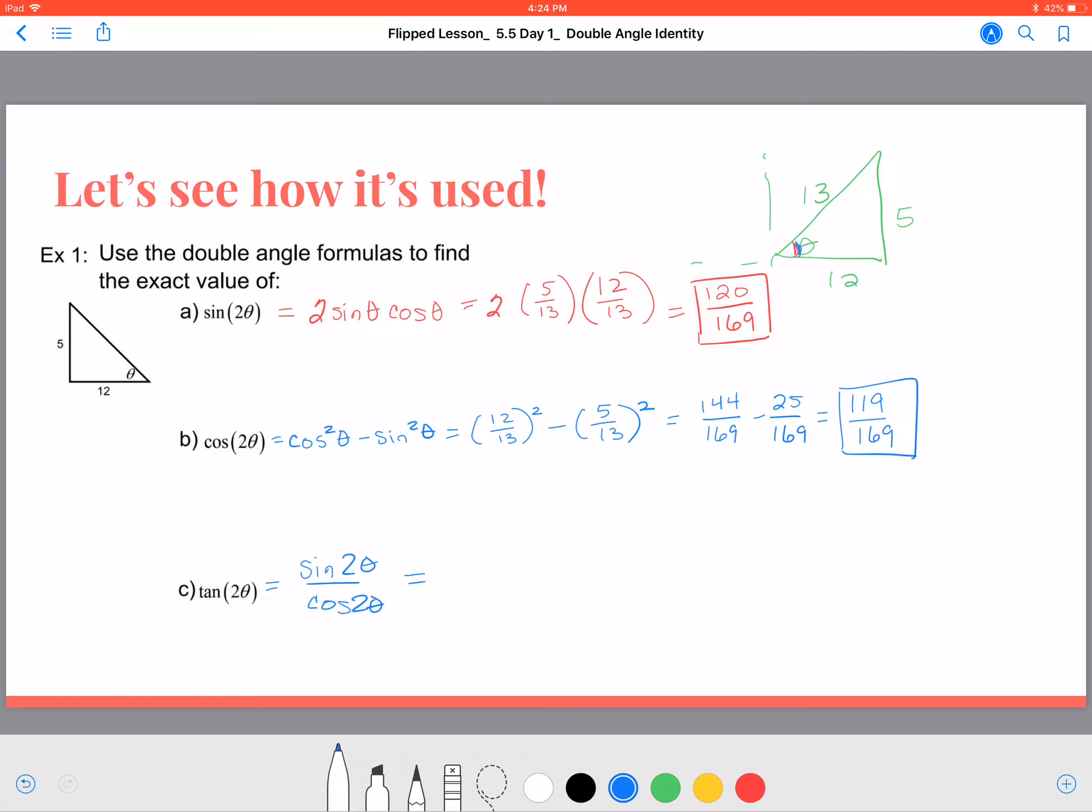I already have those values. So we're saying it's 120 over 169 divided by the cosine of 2θ, which is 119 over 169, which will be equal to 120 over 169 times the reciprocal of 169 over 119. These will eliminate each other, and we end up with the same answer, 120 over 119. So if we already have the sine of 2θ and the cosine of 2θ, we could just find the tangent of 2θ by dividing them instead.